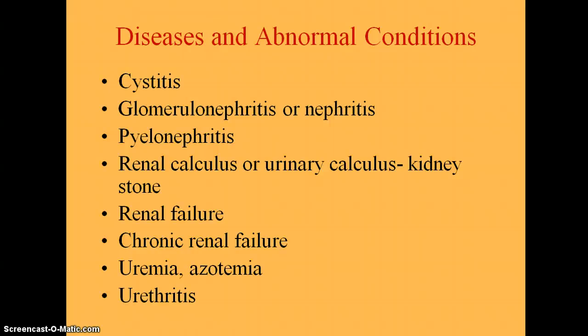Renal calculus or urinary calculus basically means a kidney stone. A calculus or stone is formed when salts in the urine precipitate — settle out of solution instead of staying dissolved. Some small calculi might be eliminated in the urine without notice. Larger ones could get lodged in the renal pelvis or ureter because they're too big or too rough to pass through. Symptoms include sudden intense pain, also called renal colic, hematuria, nausea, and vomiting.